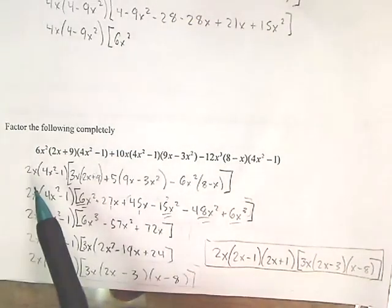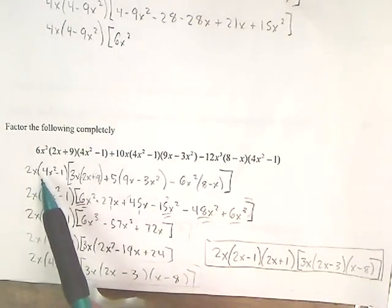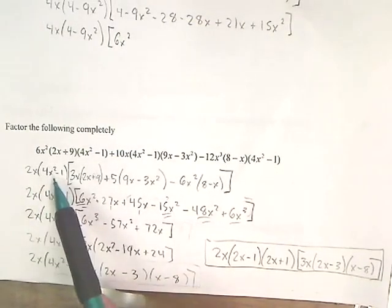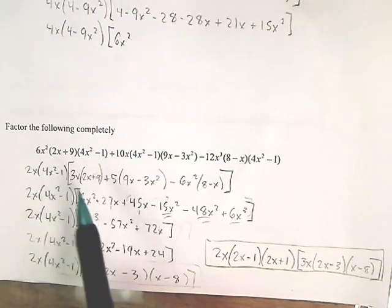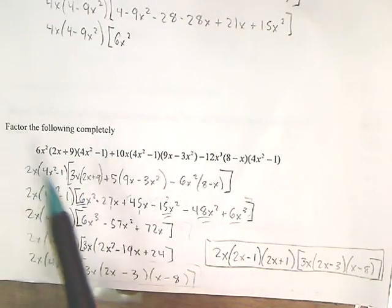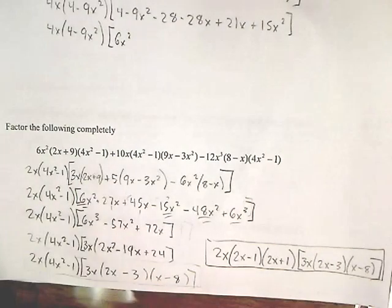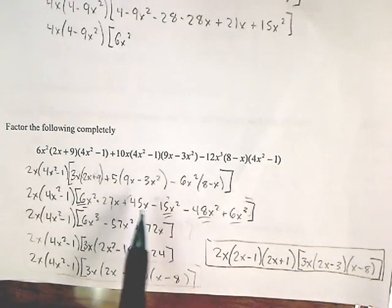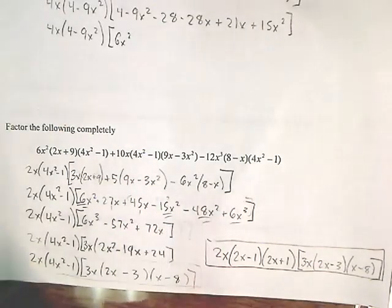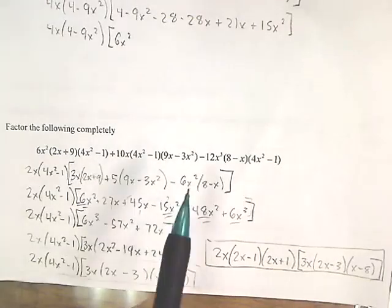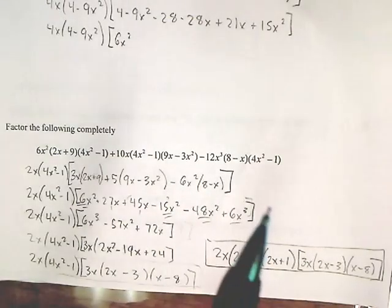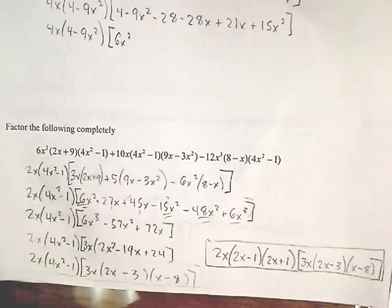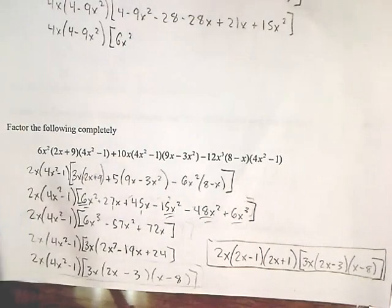You pull out the 2x and the 4x squared minus 1, leaving 3x times 2x plus 9, plus 5 times 9x minus 3x squared, minus 6x squared times 8 minus x, giving you all those.